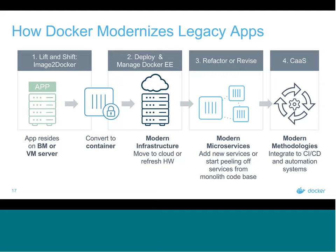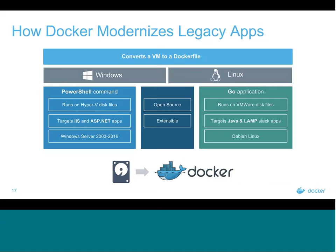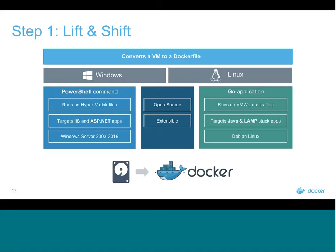Let's talk about step one: lift and shift. Whether your application is a .NET application running on Windows, or a Java or LAMP stack application running on Linux, there's a really good chance that your application is a great candidate for containerization as it stands today. It really starts with the tool called Image2Docker — we have a version for both Windows and Linux. You point Image2Docker at your existing application, whether it's on a virtual machine or a bare metal box, and it essentially outputs a Dockerfile.